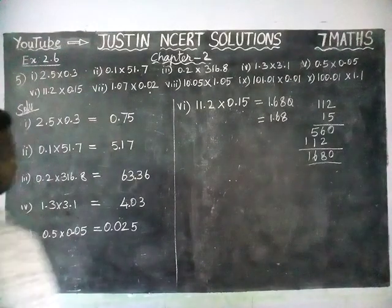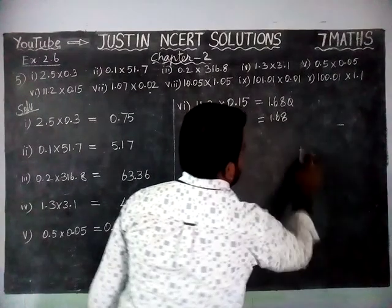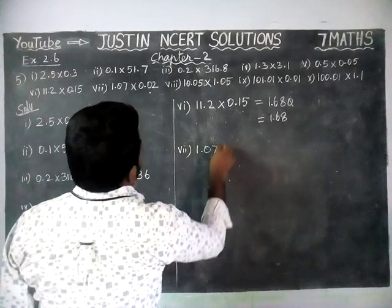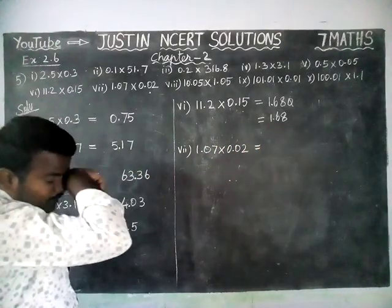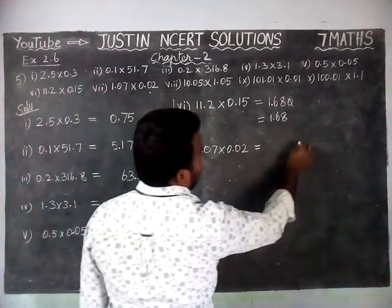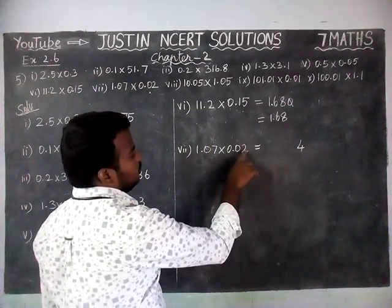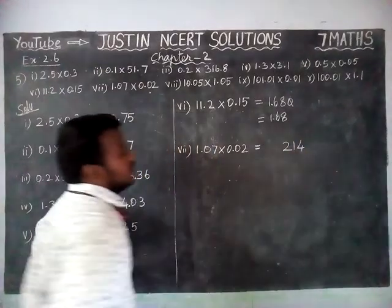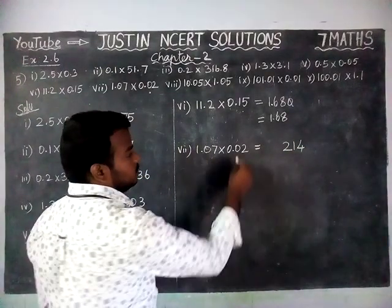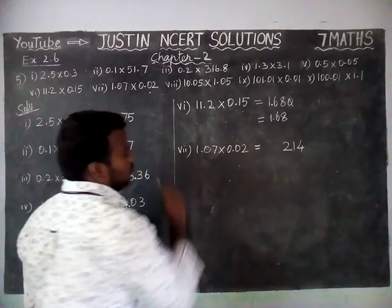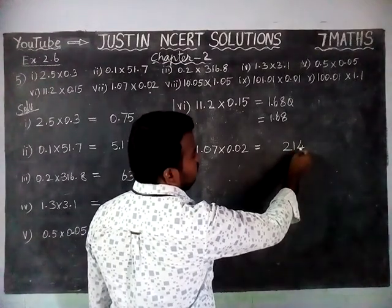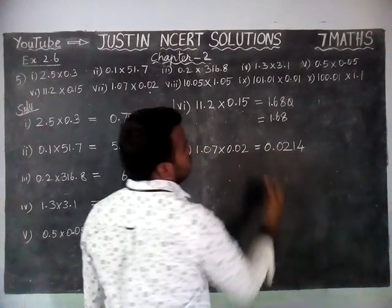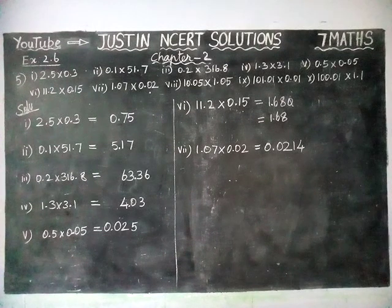7th question: 1.07 into 0.02 is equal to A. Here we have only 2 in this place, so just multiply with this number. 7 twos are 14, remaining 1. 2 into 0 is equal to 0, and we already have 1, so we write 1. 1 two is 2. Now we have to see the total number of decimal parts: 1, 2, 3, 4 — totally we need 4 decimal parts. But we have only 3 numbers, so we add another 0. So the answer is 0.0214 for the 7th question.